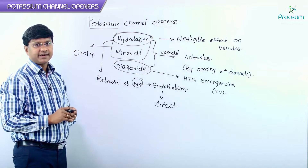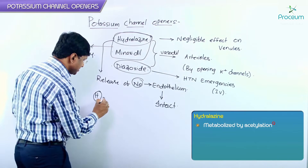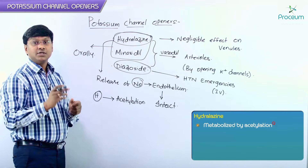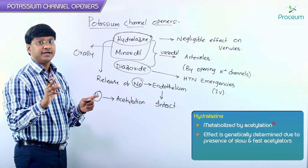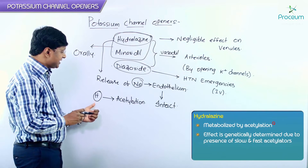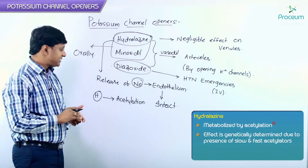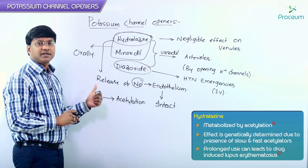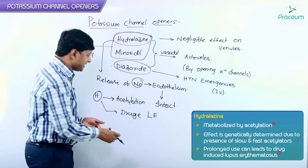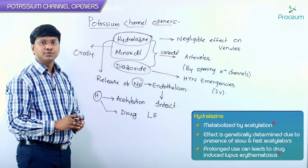Let me discuss a few points about hydralazine. This hydralazine is metabolized by acetylation. Thus, its effect is genetically determined due to the presence of slow and fast acetylators. This is a very important point. Another important point is that on prolonged use of this particular hydralazine, it can lead to drug-induced lupus erythematosus.